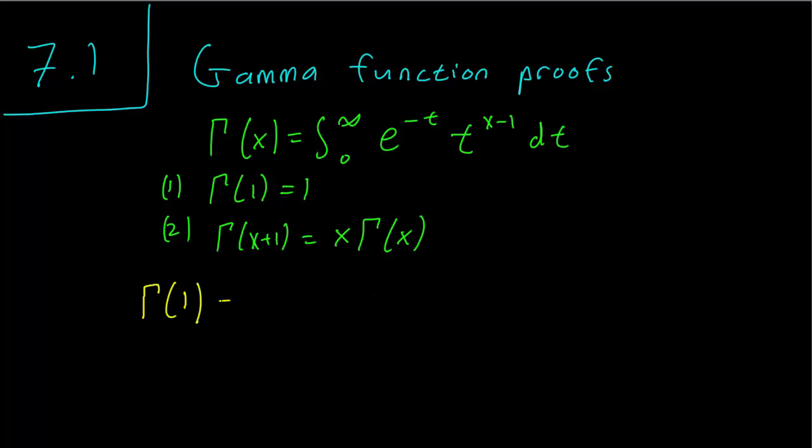So gamma 1 is defined as the integral from 0 to infinity of e to the minus t dt, and that's just going to be minus e to the minus t, taking the integral of that from infinity to 0.